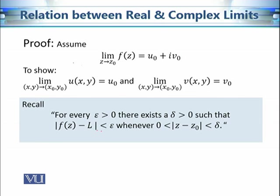So, the precise definition means that for every epsilon (epsilon is arbitrary), there exists a delta — delta is a function of epsilon — such that the distance between the functional values is less than epsilon, whenever we are in the delta-neighborhood in this punctured disk of radius epsilon and center z₀. We want to show that the limit as (x,y) approaches (x₀,y₀) of u(x,y) is u₀, and the limit of v(x,y) is v₀.